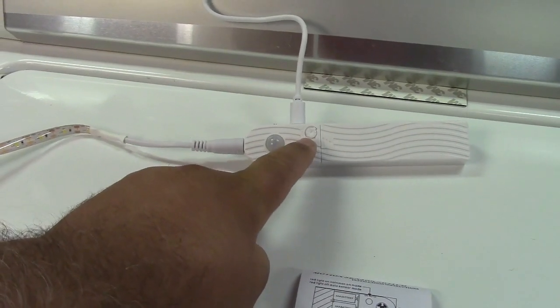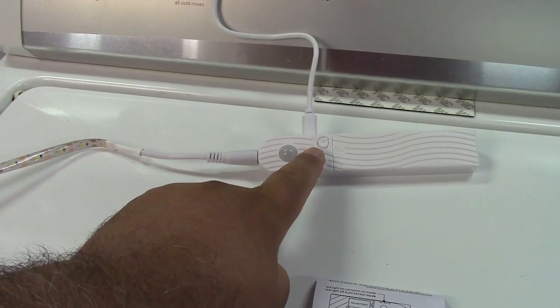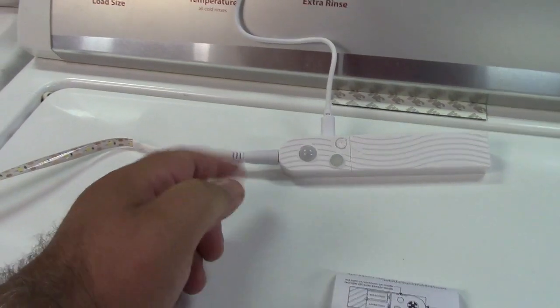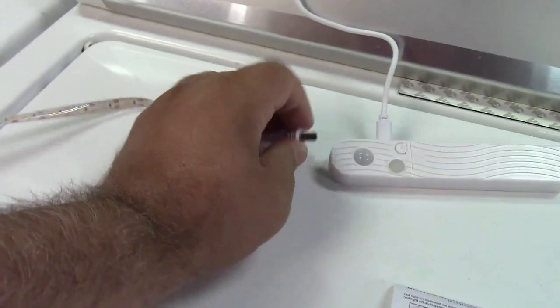The dial over here allows you to select from anywhere between 8 seconds and 5 minutes for the timeout before it goes back off. And the strip just plugs in with the plug right here, all ready to go. You just plug it in just like that.